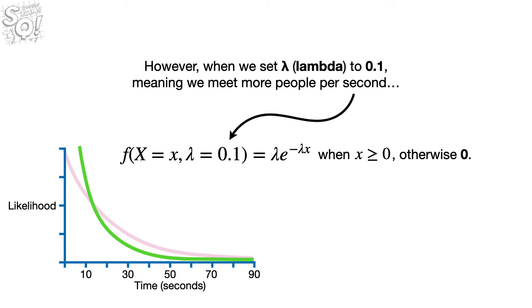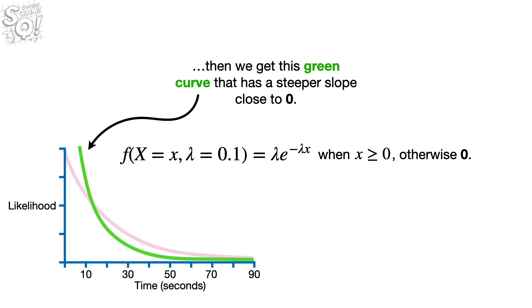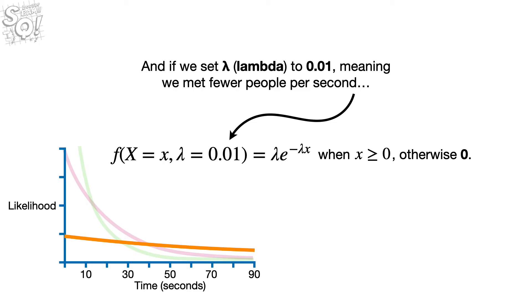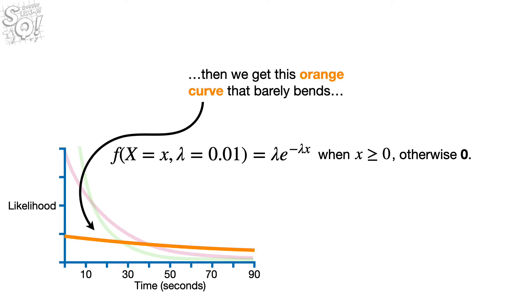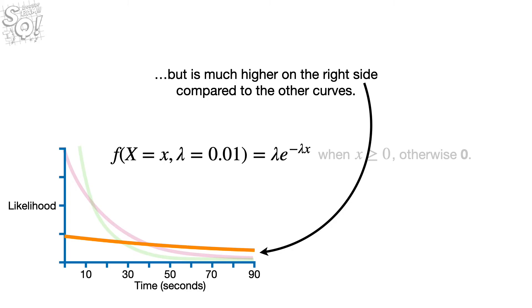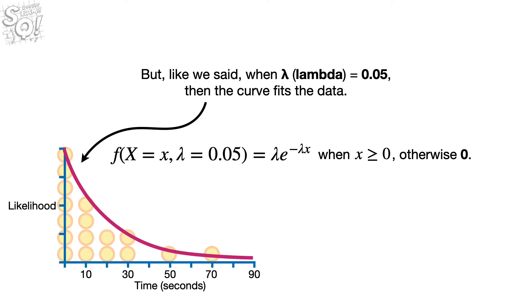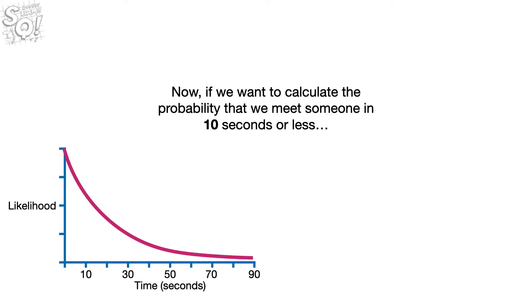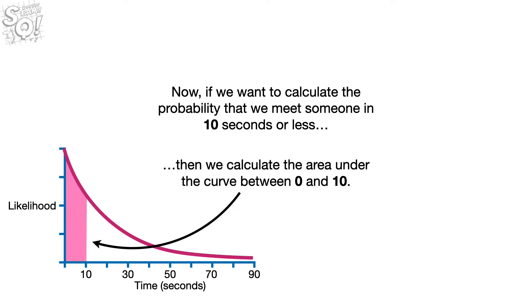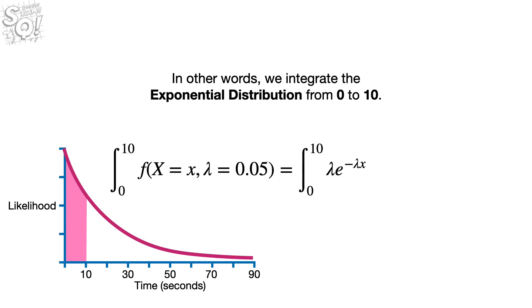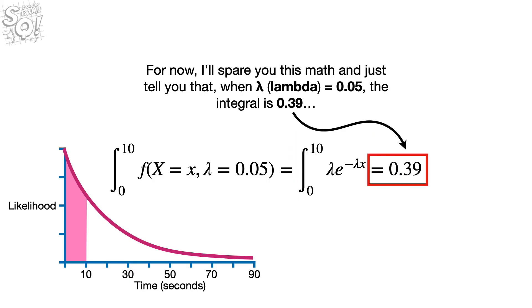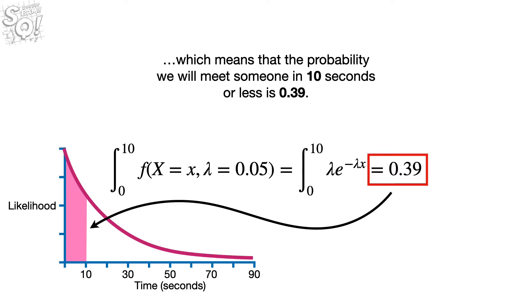If we set lambda to 0.1, meaning we meet more people per second, we get a green curve with a steeper slope close to zero. And if we set lambda to 0.01, meaning we meet fewer people per second, we get an orange curve that barely bends but is much higher on the right side. When lambda equals 0.05, the curve fits the data. If we want to calculate the probability of meeting someone in 10 seconds or less, we calculate the area under the curve between 0 and 10 — integrating the exponential distribution from 0 to 10. When lambda equals 0.05, the integral is 0.39, meaning there's a 0.39 probability of meeting someone in 10 seconds or less.